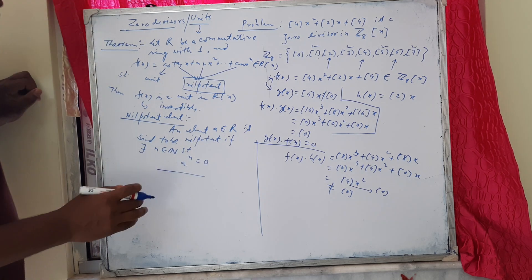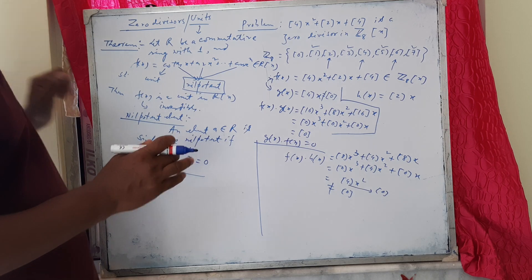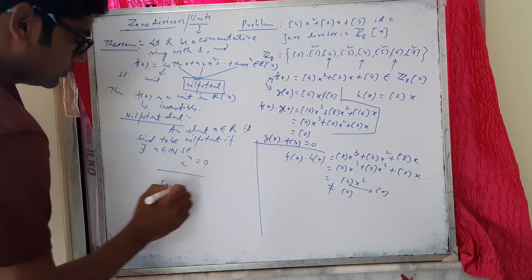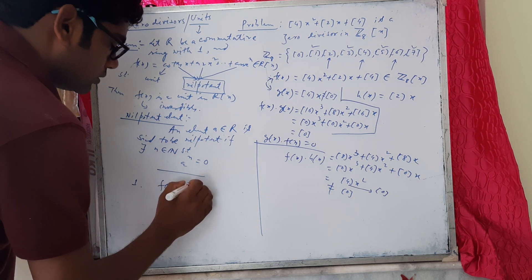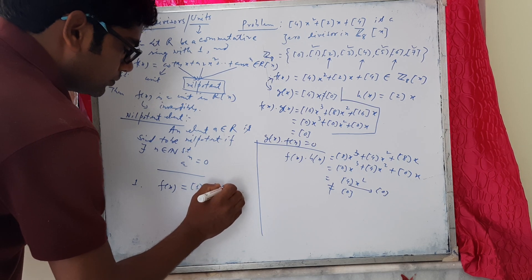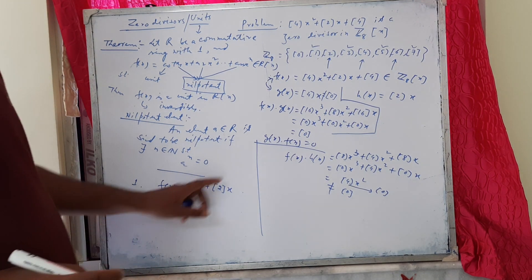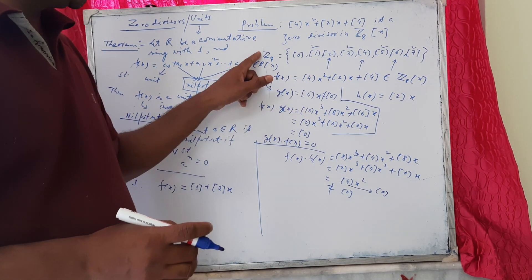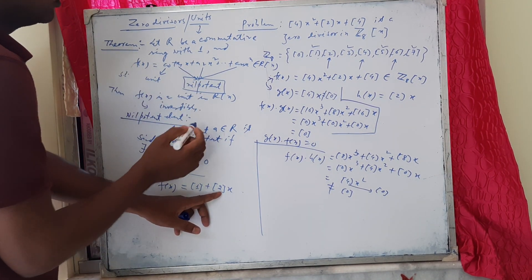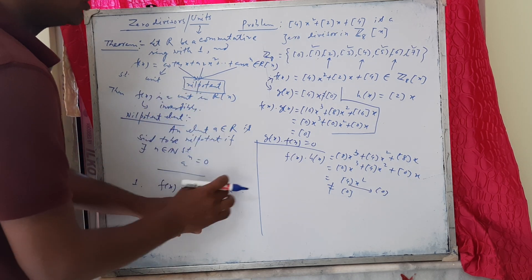Using this definition and applying the theorem, we consider a polynomial of the type f(x). We take f(x) = class 1 + class 2x. Here, class 1 is a unit in Z₈ and class 2—if we want to use this theorem, then class 2 must be a nilpotent element in Z₈.